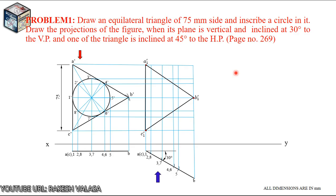Similarly, identify the circle intersecting points. Give lettering 1¹ dash, 2¹ dash, 3¹ dash, 4¹ dash, 5¹ dash, 6¹ dash, 7¹ dash, 8¹ dash. Join those points — it looks like an ellipse.